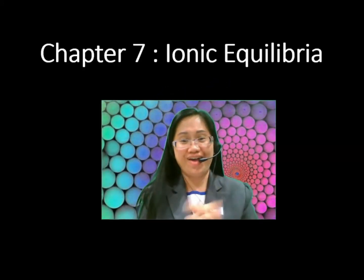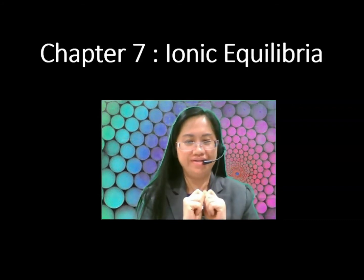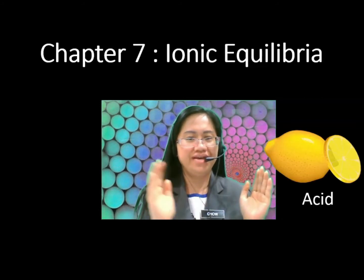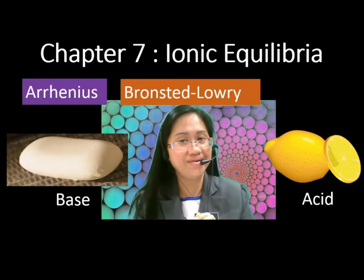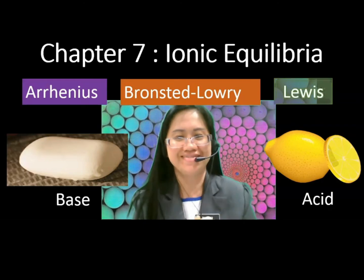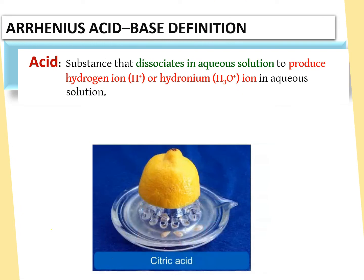Hello everyone, are you ready for today's lesson? In this video we are going to learn the definition of acid and base according to Arrhenius, Brønsted-Lowry, and Lewis — Chapter 7: Ionic Equilibria. According to Arrhenius, an acid is a substance that dissociates in aqueous solution to form or produce hydrogen ion or hydronium ion in aqueous solution.